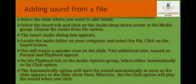Steps to add sound from a file: Select the slide where you want to add the sound. Select the Insert tab and click on the Audio drop-down arrow in the Media group. Choose the Audio from File option. The Insert Audio dialog box appears — locate the audio folder on your computer, select the file, and click the Insert button. A speaker icon will appear on the slide, and two additional tabs named Format and Playback will appear.